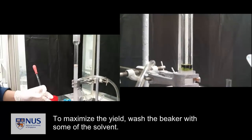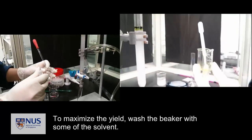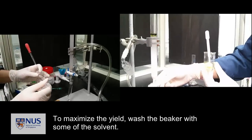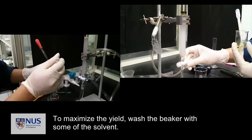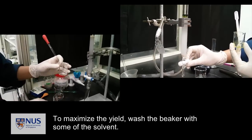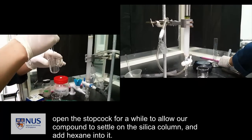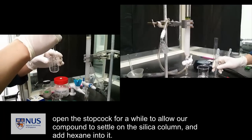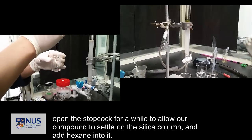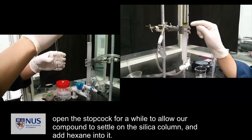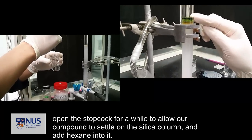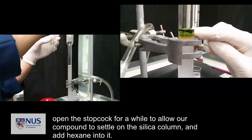Circulate the dropper as you add into the column. To maximize the yield, wash the beaker with some of your solvent. Open the stopcock for a while to allow our compound to settle on the silica column under normal pressure.